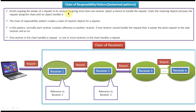Avoid coupling the sender of a request to its receiver. Normally there is one sender and only one receiver, but in the case of Chain of Responsibility there is only one sender but there are multiple receivers. Any one receiver, or one or more receivers, will handle the request. The request is passed along the chain until an object handles it — that is what we are doing here.